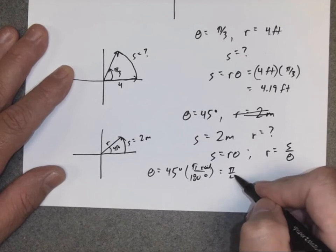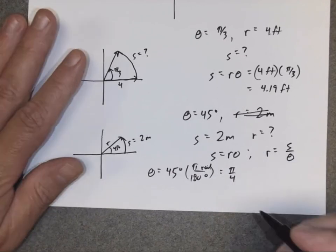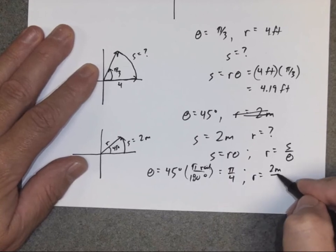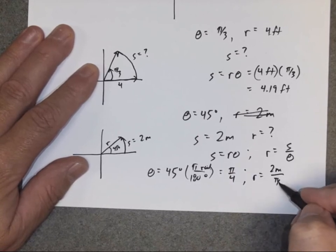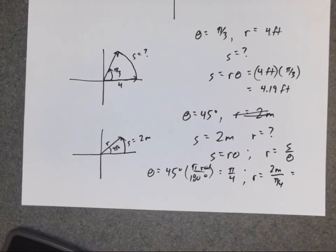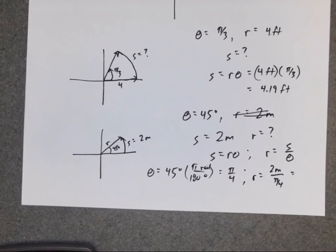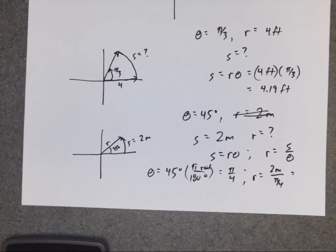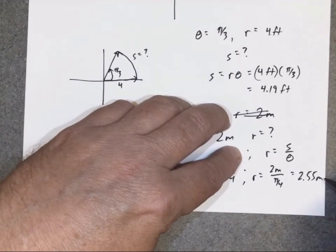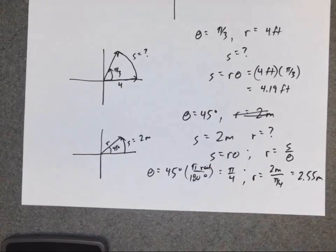So now, r equals 2 meters over π over 4. This is like an interesting, make sure you can do this on your calculator. I'm going to take π divided by 4, put that in my denominator, times 2 equals 2.55. So the radius is like 2.55 meters.